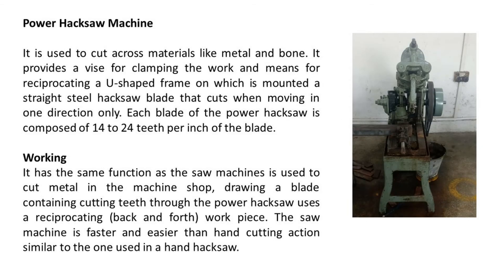Power hacksaw machine. It is used to cut across materials like metal and bone. It provides a vise for clamping the work and means for reciprocating a U-shaped frame on which is mounted a straight steel hacksaw blade that cuts when moving in one direction only. Each blade of the power hacksaw is composed of 14 to 24 teeth per inch of the blade. Working: it has the same function as saw machines and is used to cut metal in the machine shop, drawing a blade containing cutting teeth through the work piece in a reciprocating back and forth motion. The saw machine is faster and easier than hand cutting.